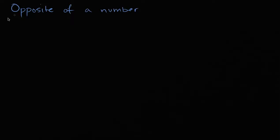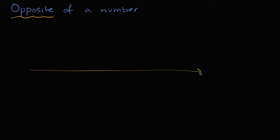What I want to do in this video is think about what it means to have an opposite of a number. So let me draw a number line here. And let's put some numbers on this number line. We can start at zero, and if we go to the right, we have positive numbers.